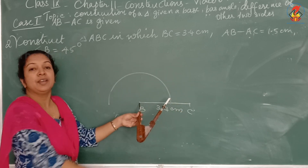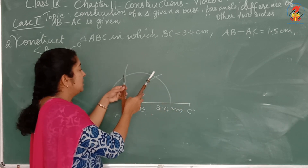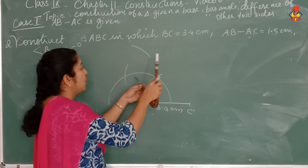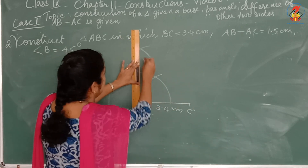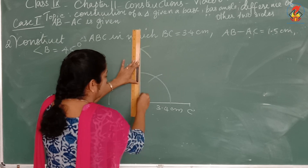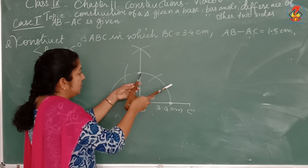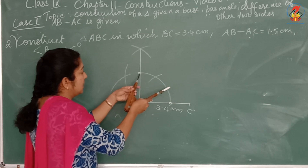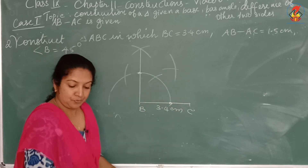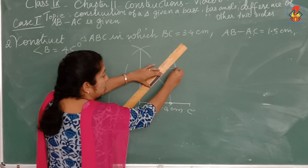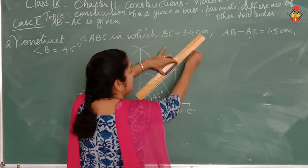To get 45 degrees, first construct 90 degrees: draw arcs for 60 and 120 degrees, take more than half of that curve, draw arcs from both points, and join them — this gives 90 degrees. Then bisect this angle: take more than half, draw an arc, join the two intersection points. This gives 45 degrees. Extend the ray and mark it as X.